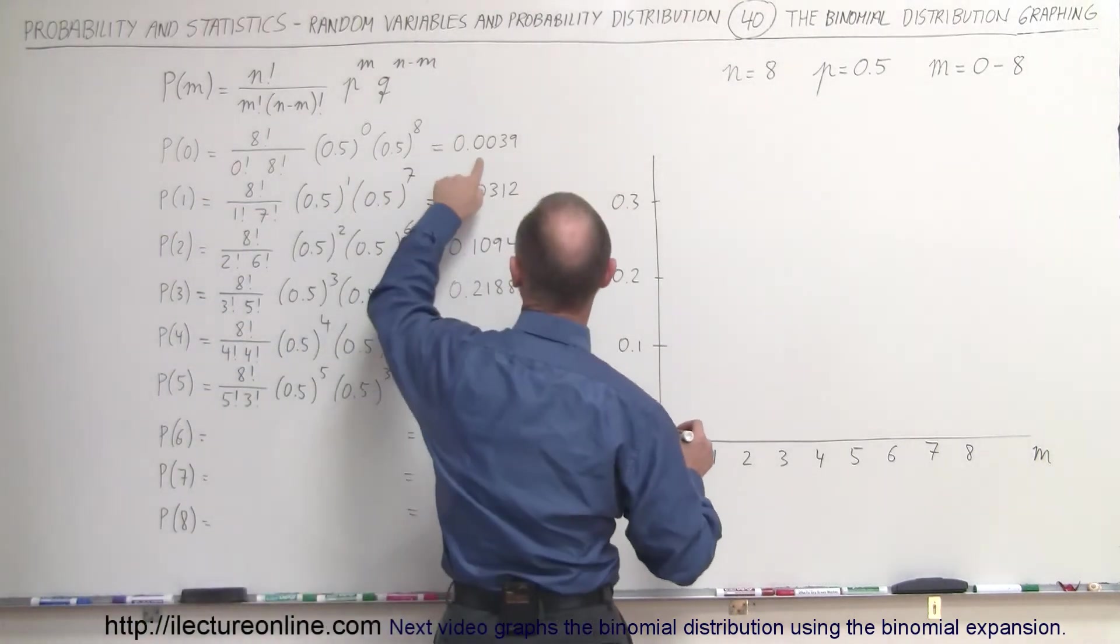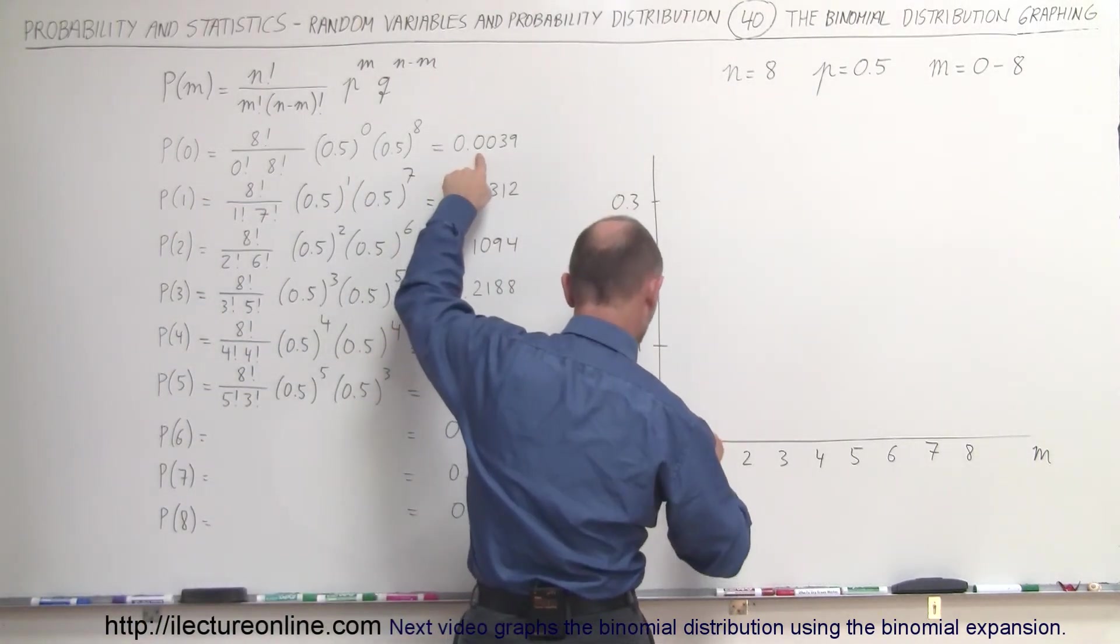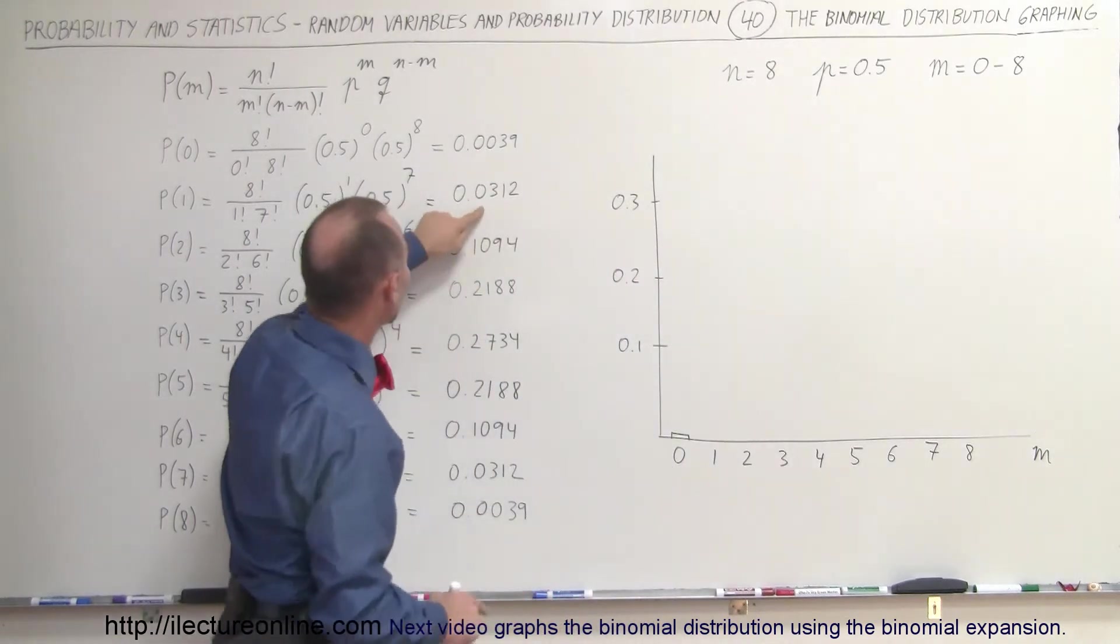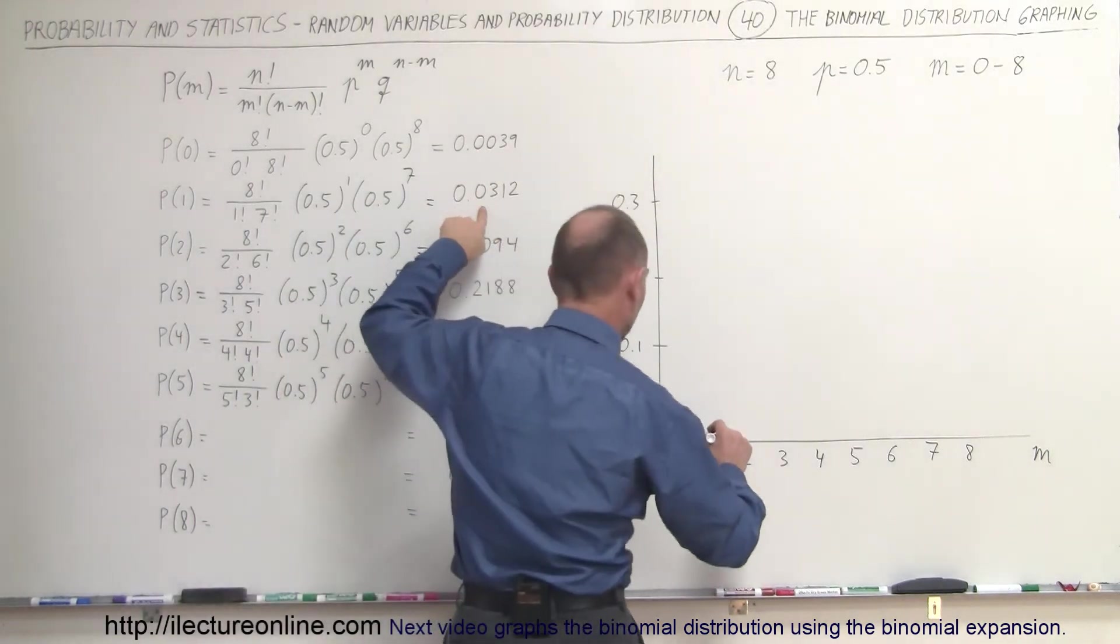0.1 is here, so it would be just a tiny little number down here somewhere. For one, that's the probability of 0.03, that's still a very tiny number.